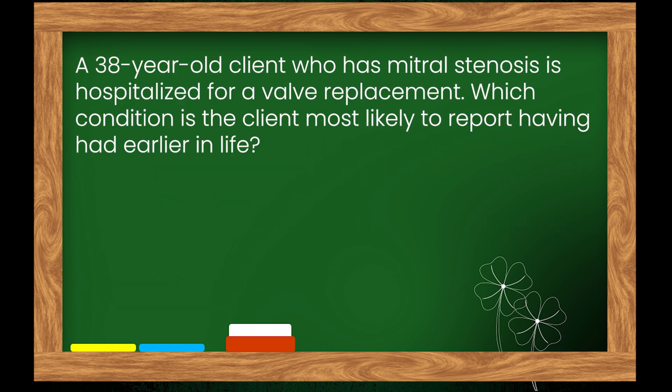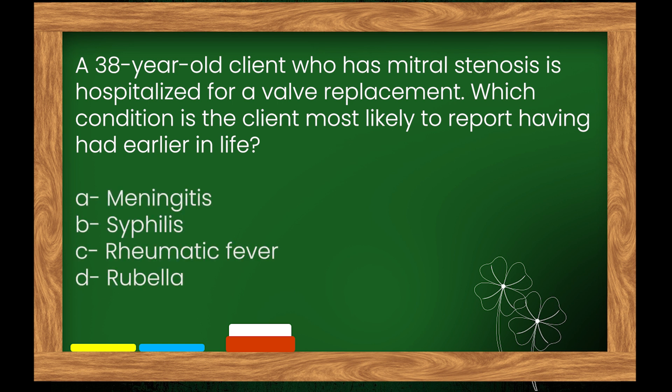Question 7: A 38-year-old client who has mitral stenosis is hospitalized for a valve replacement. Which condition is the client most likely to report having had earlier in life? Options: A. Meningitis, B. Syphilis, C. Rheumatic fever, D. Rubella. The right answer is option C: Rheumatic fever.